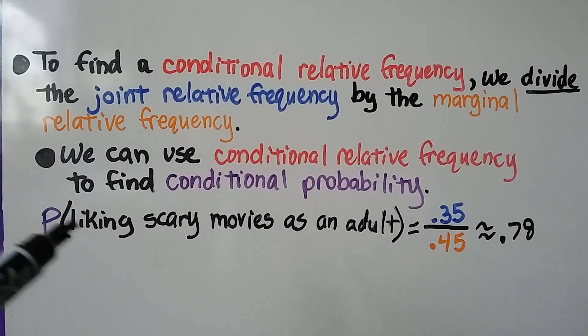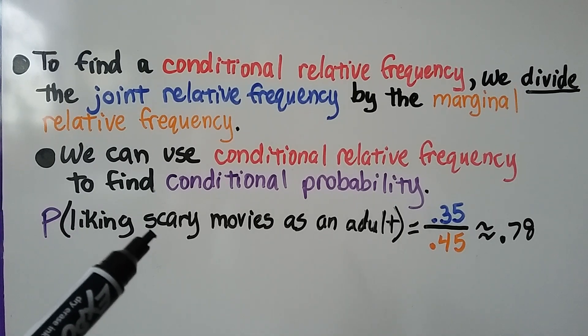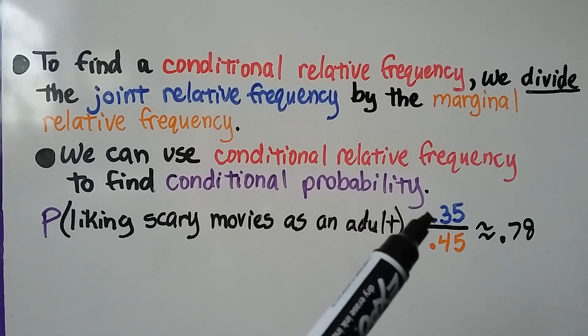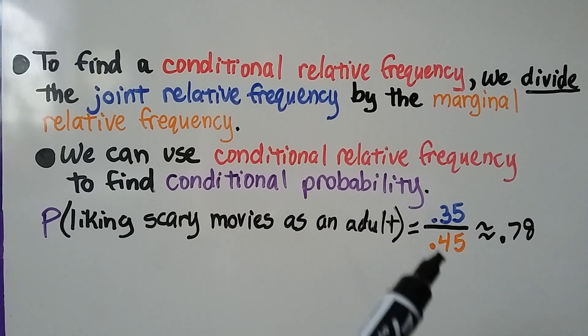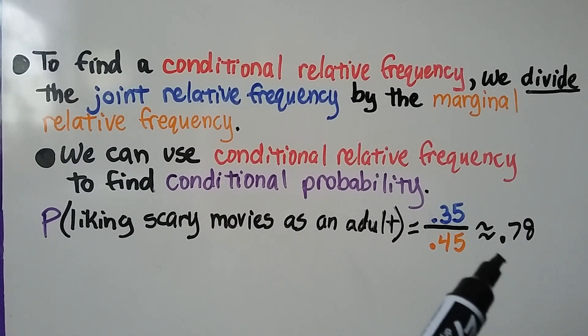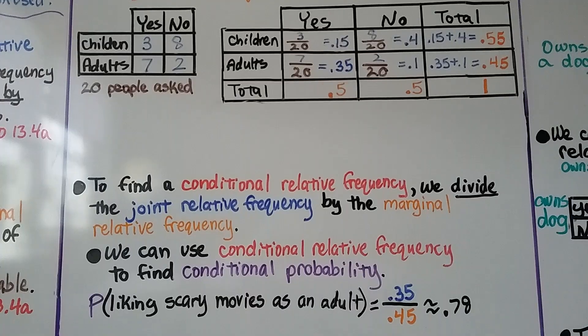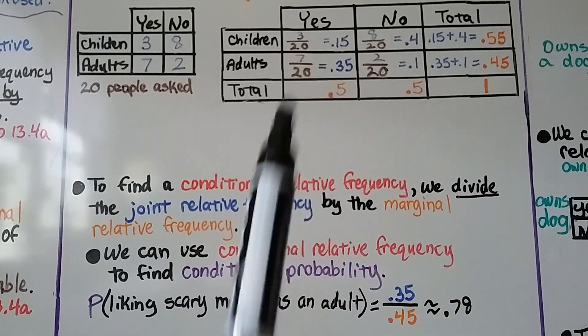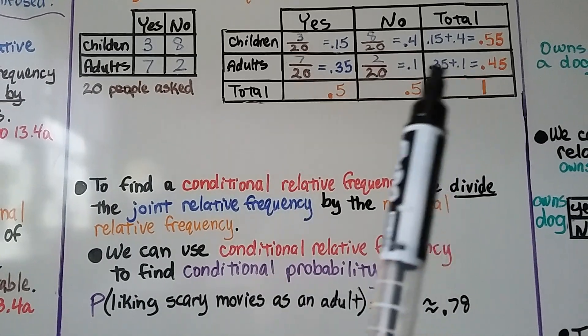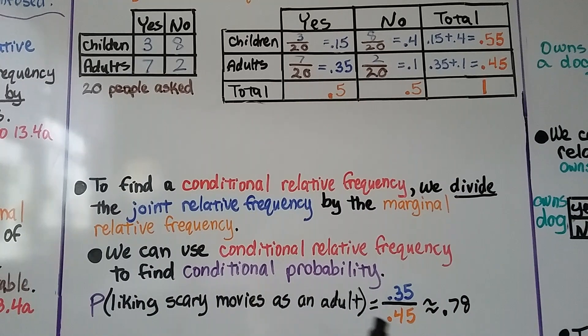So the probability of liking scary movies as an adult is equal to 0.35 over 0.45. We would find 0.35 divided by 0.45, and it would give us approximately 0.78. We did this adult yes, 0.35, and we divided it by the total 0.45. That's how we got our approximately 0.78.